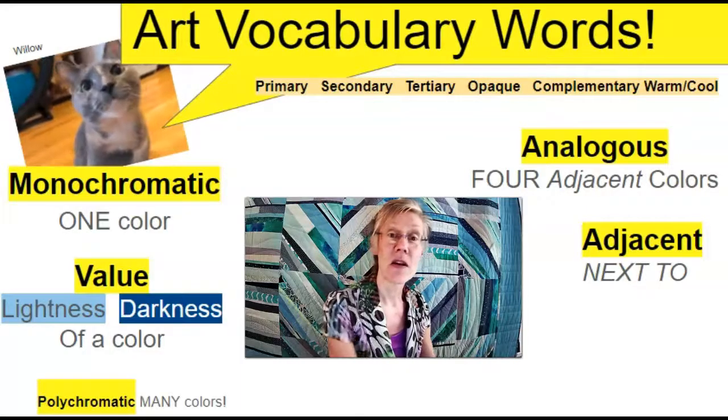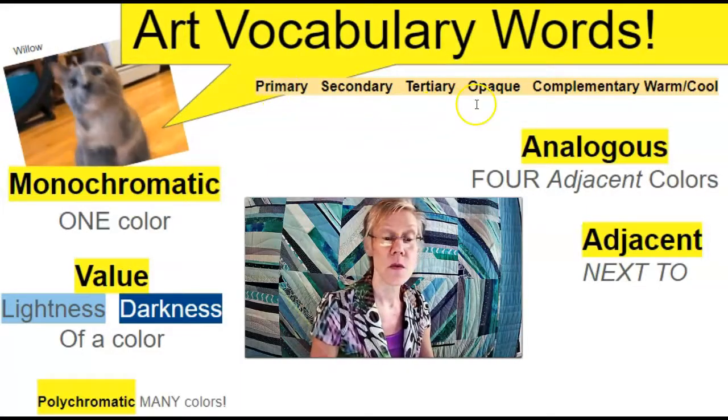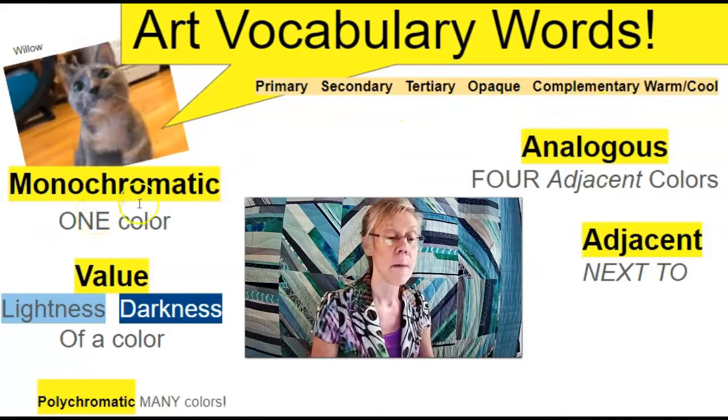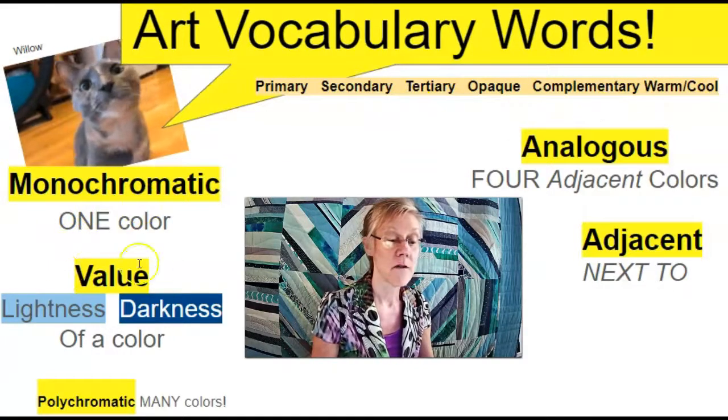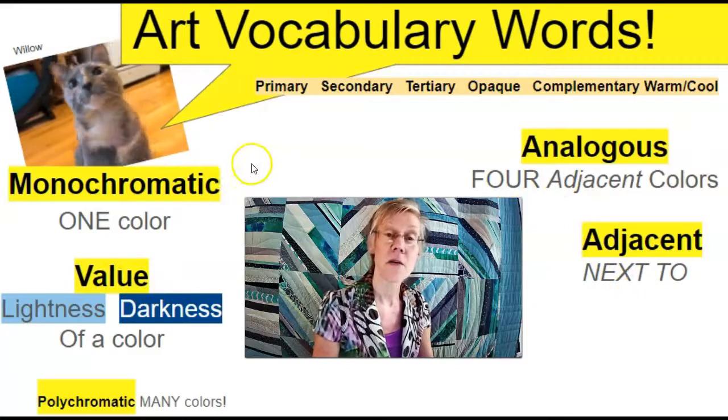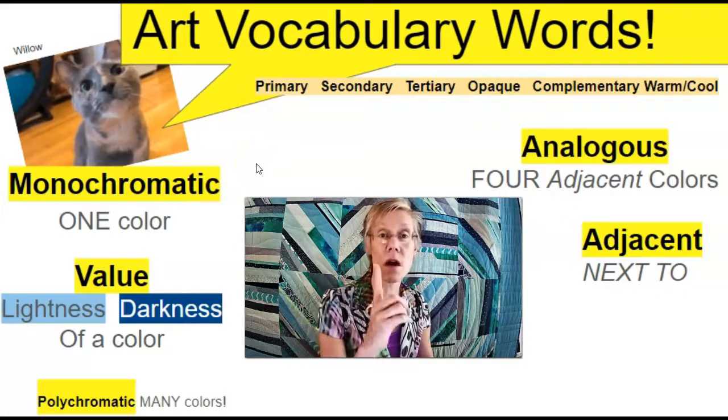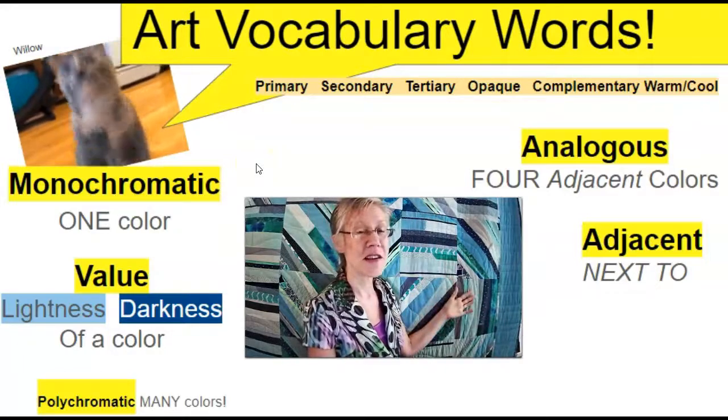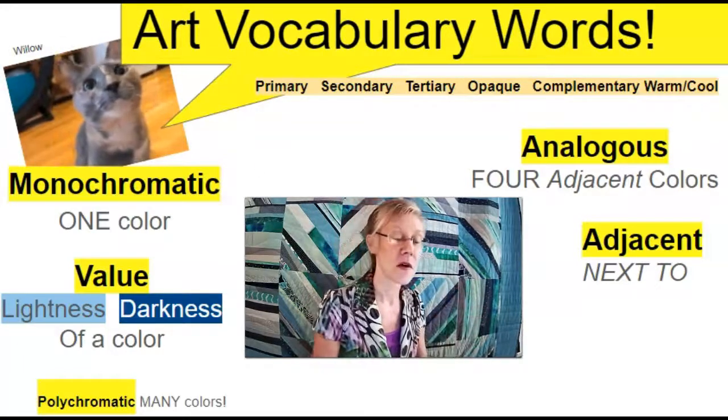You are learning a lot of new words in art class. The words for today's lesson are monochromatic, value, analogous, and adjacent. Monochromatic just means one color, like all different shades of blue in the quilt that my mom made for me.